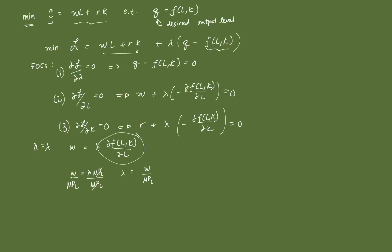Similarly, using condition 3, we get R is equal to lambda times the partial derivative of F(L,K) with respect to K. That's just equal to MPK, the marginal product of capital. Dividing both sides by MPK, we get lambda is equal to R over MPK.